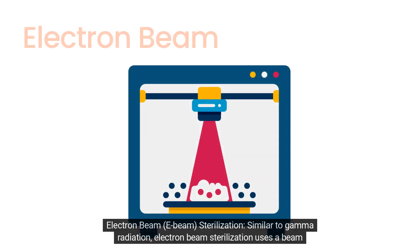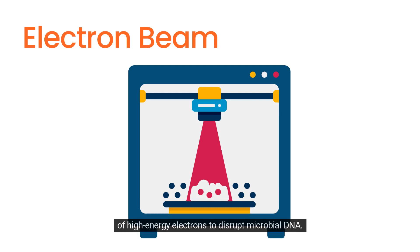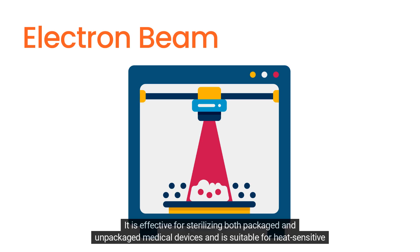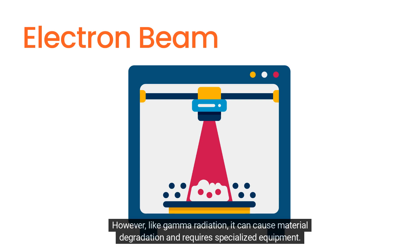Electron beam (E-beam) sterilization: similar to gamma radiation, electron beam sterilization uses a beam of high-energy electrons to disrupt microbial DNA. It is effective for sterilizing both packaged and unpackaged medical devices and is suitable for heat-sensitive materials. However, like gamma radiation, it can cause material degradation and requires specialized equipment.